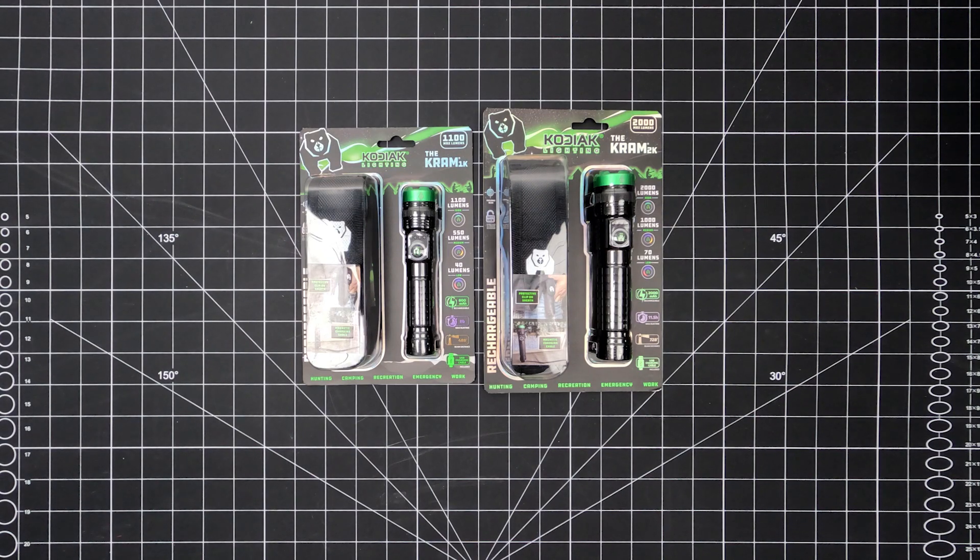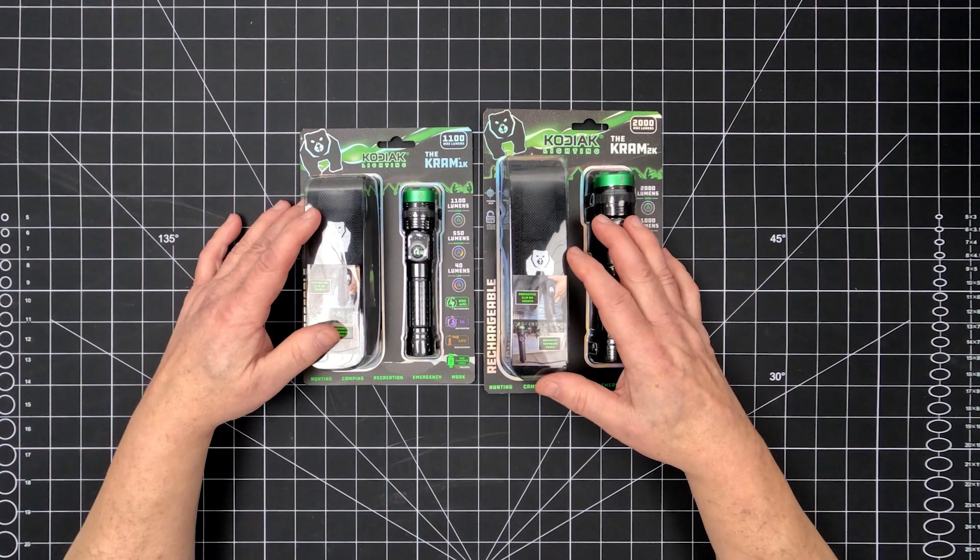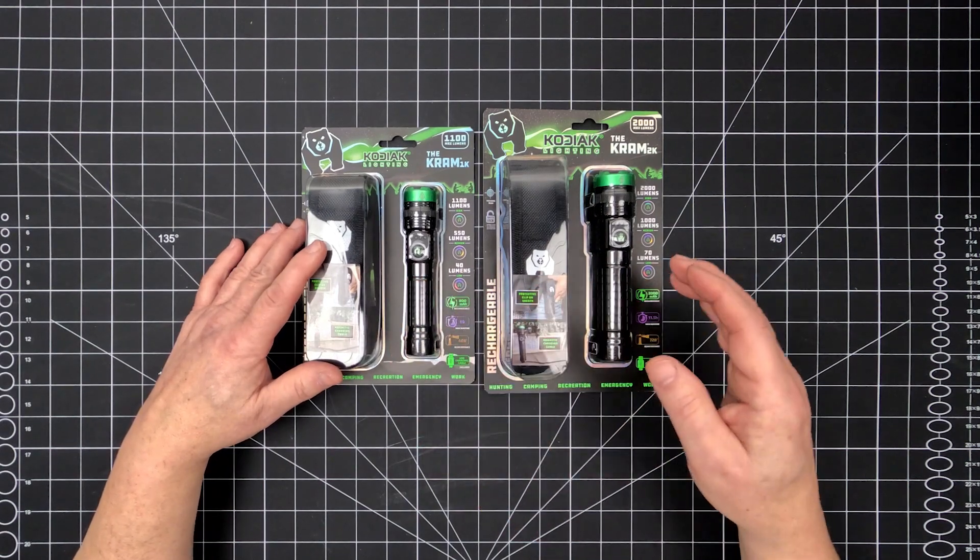The Kodiak CRAM is a rechargeable, compact flashlight available in 1K and 2K models. Let's take a closer look at the features and benefits of both.